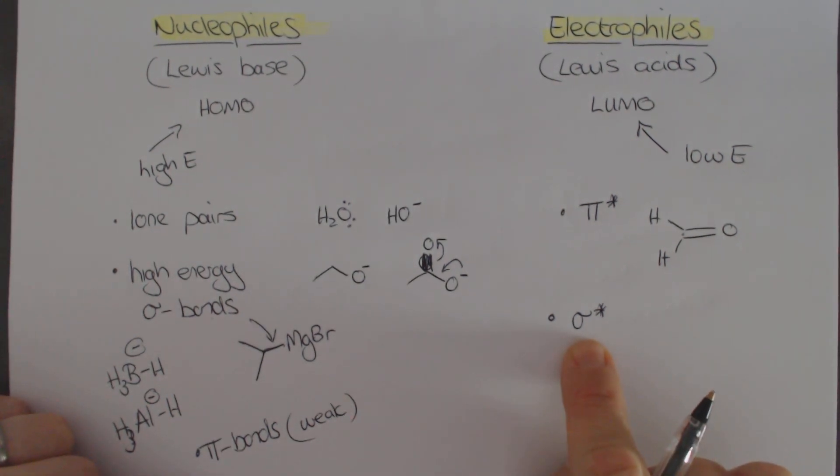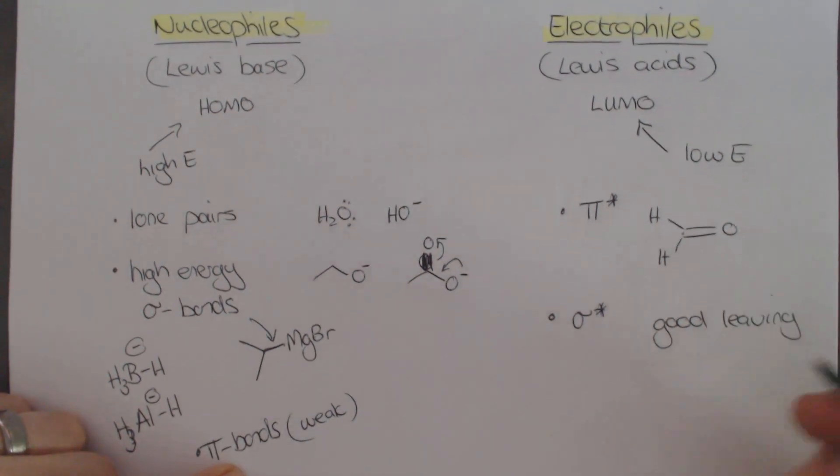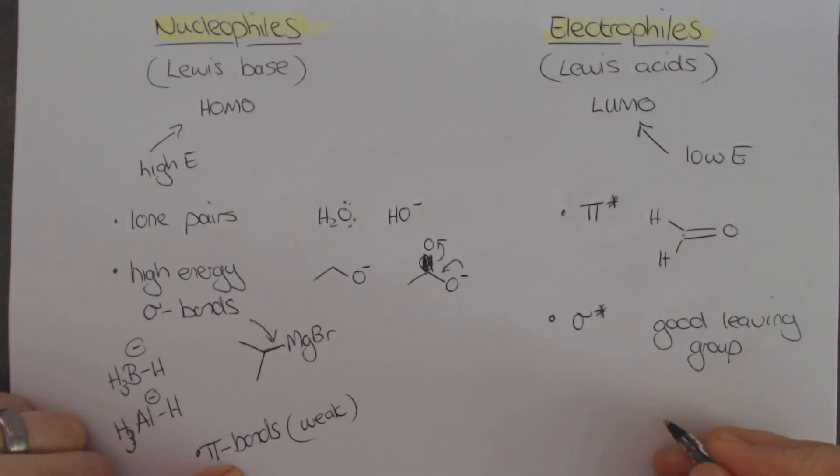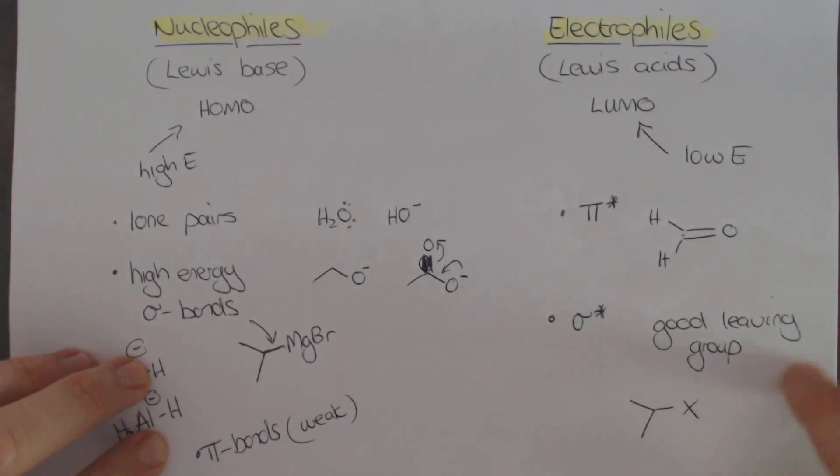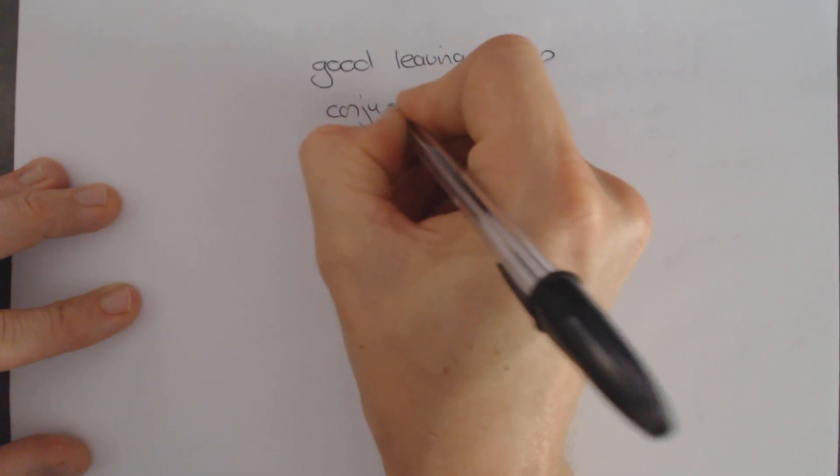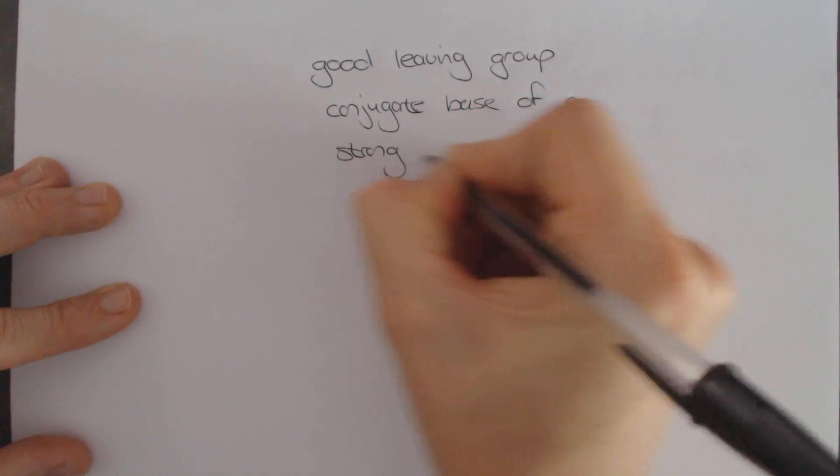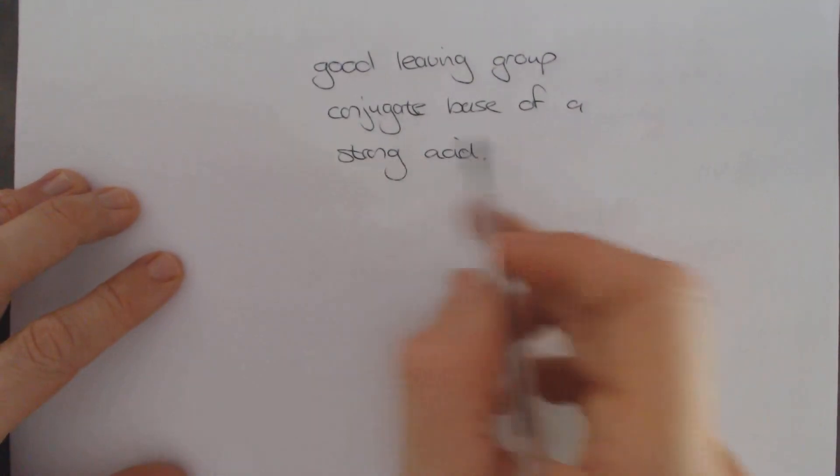The other one we're going to be looking at is the sigma star antibonding orbital. Essentially these ones are any carbon that has a good leaving group bonded to it. What are we looking for in a good leaving group? We are looking for something that when it leaves, it is nice and stable. The typical leaving groups that we look at are chlorine, bromine, and iodine as leaving groups. But I want to expand on this because this is an important principle. A good leaving group is the conjugate base of a strong acid.